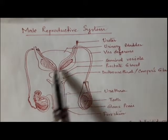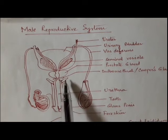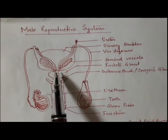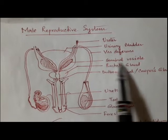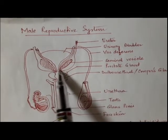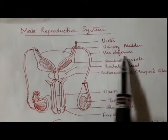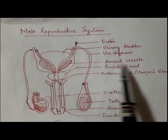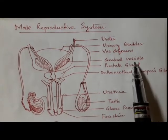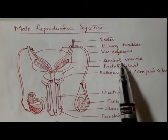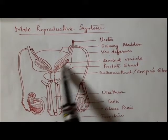Vas deferens conducts sperms from the testis to the entire reproductive organ. Next is the seminal vesicle. We will talk about the junction of the seminal vesicle and the vas deferens. Let us first complete this portion and then we will talk about it. Seminal vesicle is actually a lobulated sac which is around five centimeters long.